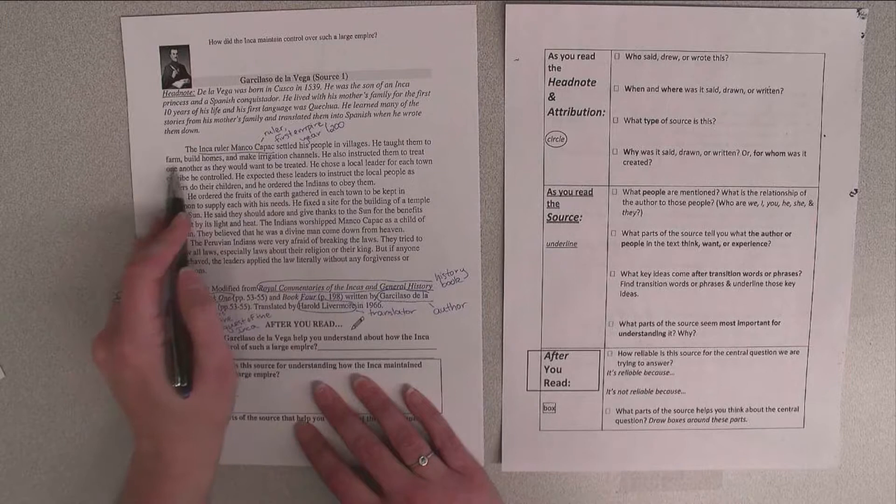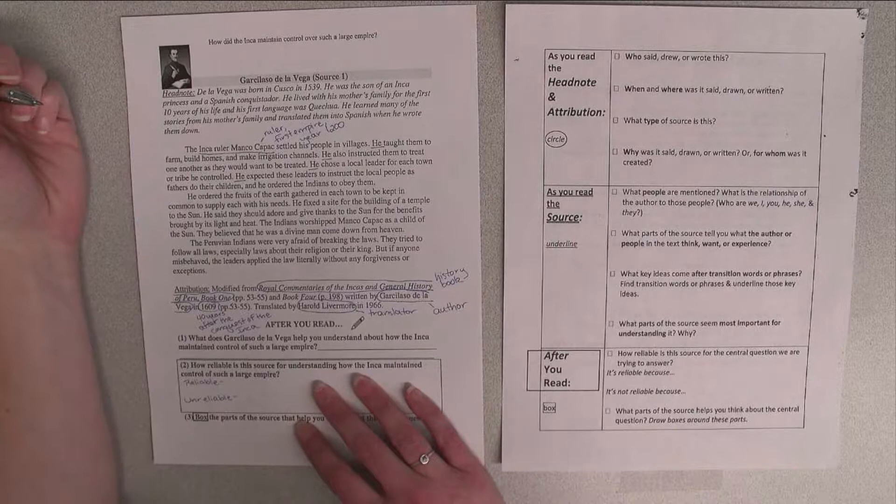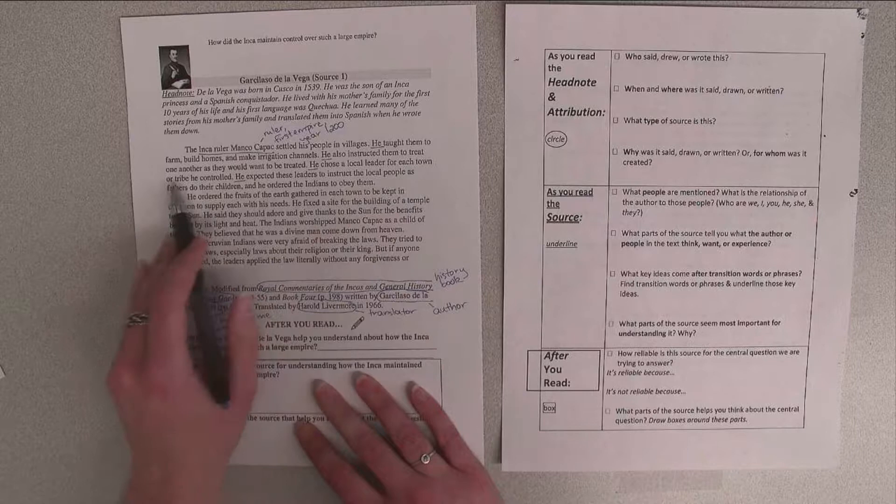He taught them to farm, build homes, and make irrigation channels. Because I know we're talking about Manco Capac, anytime I see 'he' in this paragraph, I'm going to note that it's talking about him and the things he did.